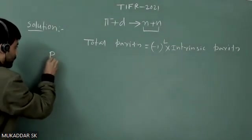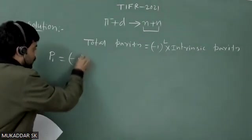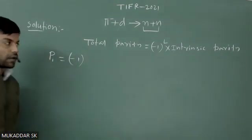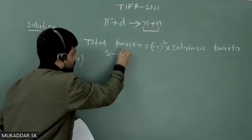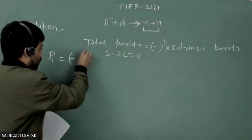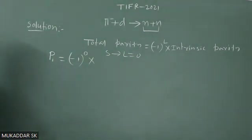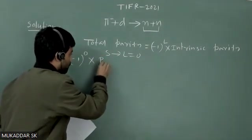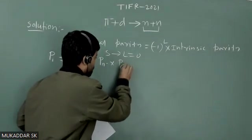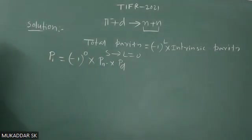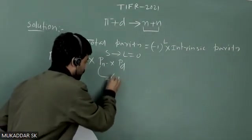The total parity of the initial state should be equal to minus one to the power L, which is the orbital part. For s-wave capturing, L is equal to zero, so there is no contribution from the orbital part. Then we have to take the intrinsic parity of pi minus and intrinsic parity of the neutron. As we know, the intrinsic parity of pi minus is minus one.